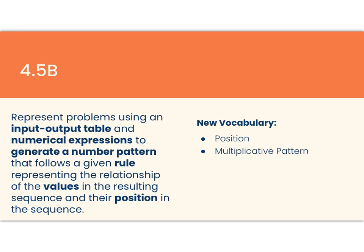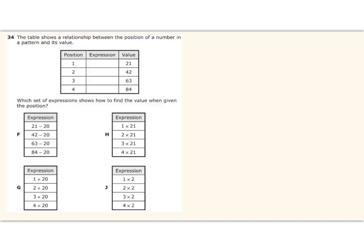In fourth grade, students use input-output tables and numerical expressions to generate a number pattern that follows a rule, and they start talking about the position of a value in terms of a sequence. Let's take a look at that. They also start looking at multiplicative patterns. So let's say that I have a number pattern and I have different terms in the sequence of that pattern. Then the position refers to the order in which those values fall.